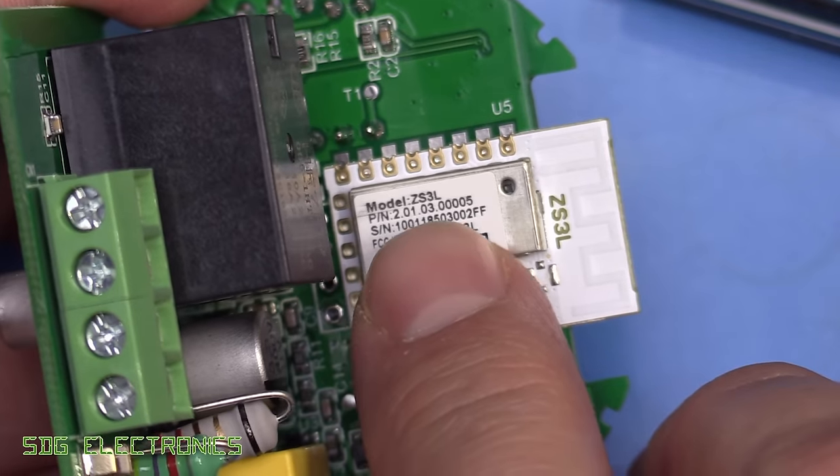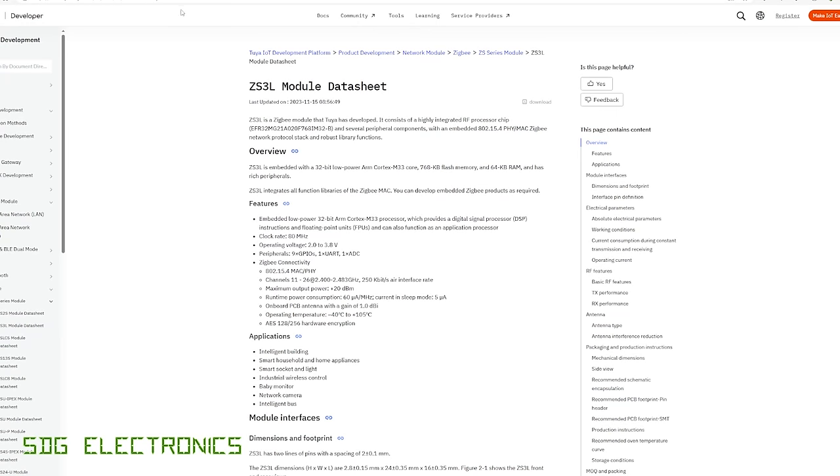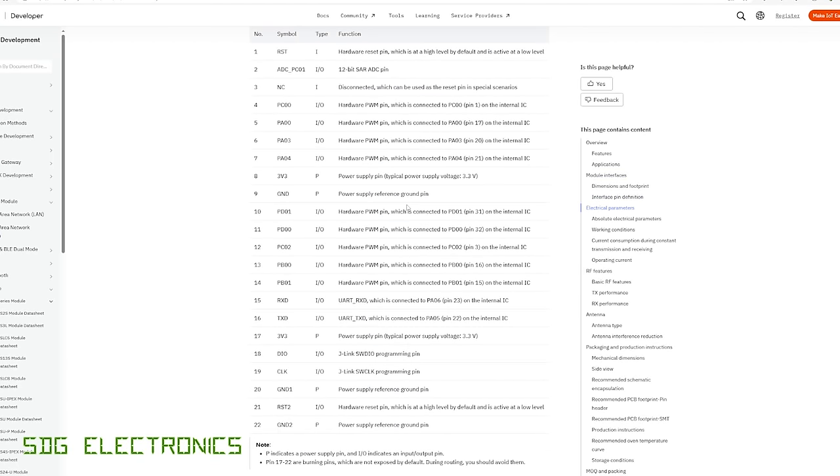If we flip the board over, we've got the Zigbee module - the ZS3L. This is actually a full SOC that allows you to run your application firmware. It's got an ARM Cortex M33, does all the Zigbee, and you can use this as a complete applications processor for modules like this.